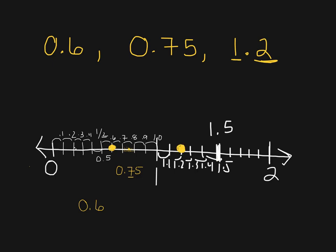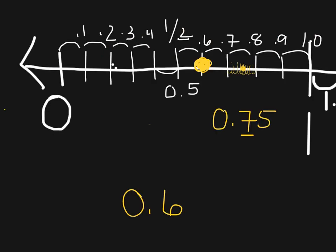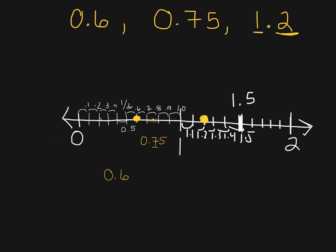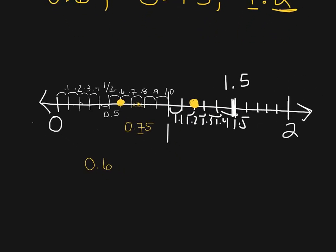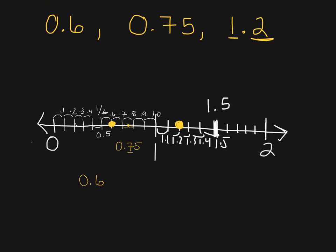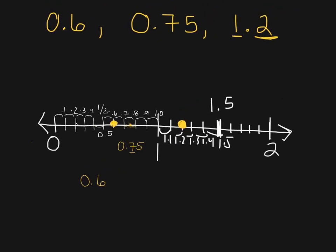So there you have it — we have placed all three numbers on a number line. Pay attention to that decimal when you say it; that's going to tell you how many pieces you should be cutting up the interval between your whole numbers. Hope this helped. Watch it again if you need some more assistance, and we'll see you later.